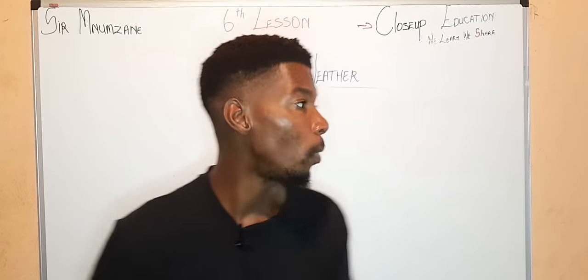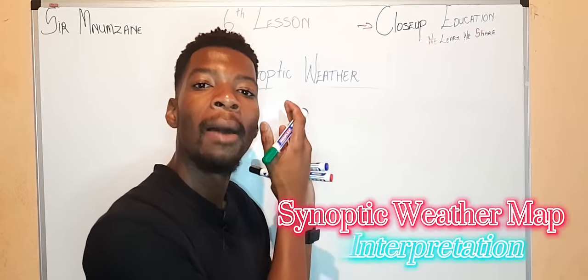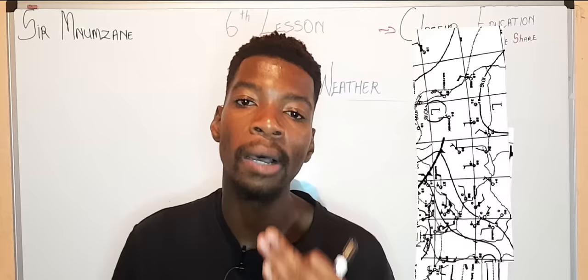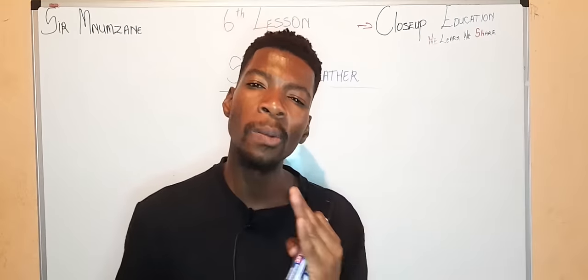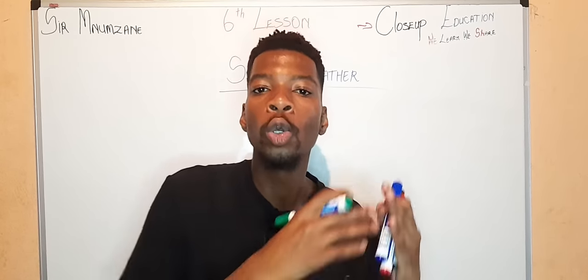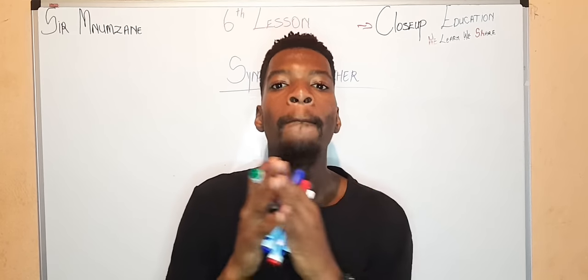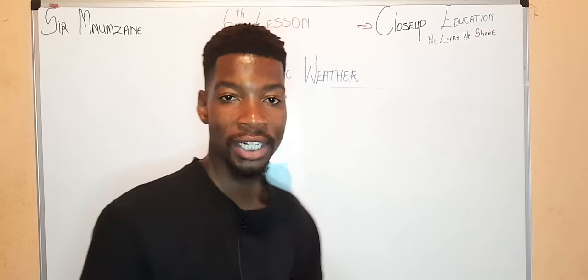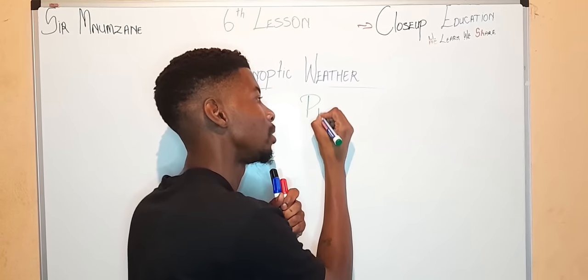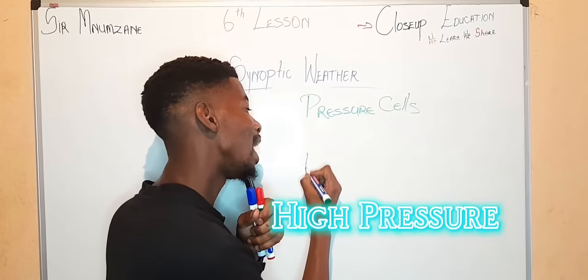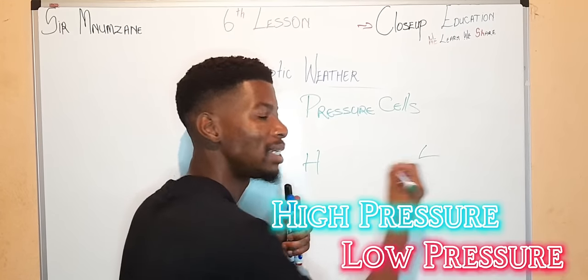Today we'll be speaking more about synoptic weather map interpretation. How to understand or interpret a synoptic weather map. A synoptic weather map consists of pressure cells. Pressure cells are used to show weather patterns of a particular place. So we have two pressure cells: we have a high pressure cell and a low pressure cell.